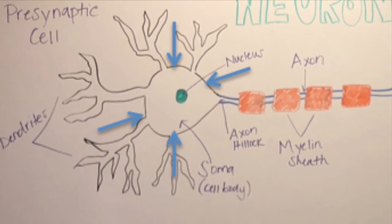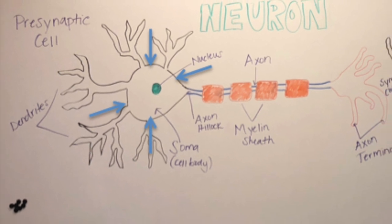The soma is the cell body of a neuron which houses the nucleus and other cellular organelles.